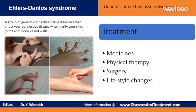Surgery may be recommended to repair joints damaged by repeated dislocations. However, your skin and the connective tissue of the affected joint may not heal properly after surgery. Surgery may also be necessary to repair ruptured blood vessels or organs in people with Ehlers-Danlos syndrome, vascular type.